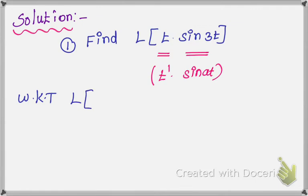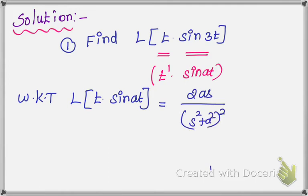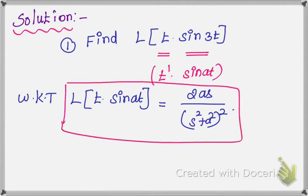L{t·sin at} is equal to the formula: 2as over (s² + a²)². Just now we derived this. This is the formula. For the formula, just 3t. Sin 3t.